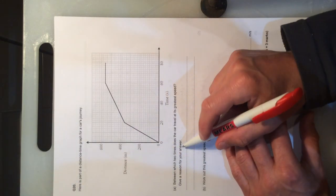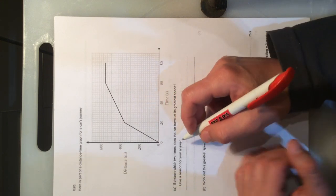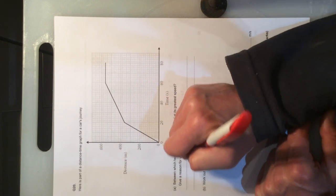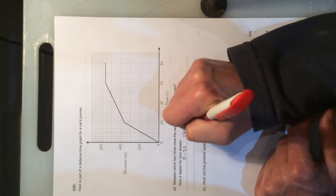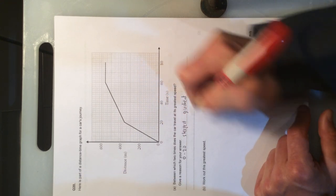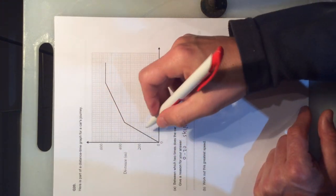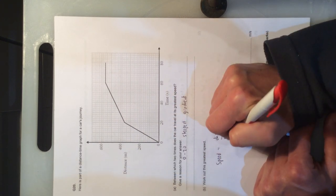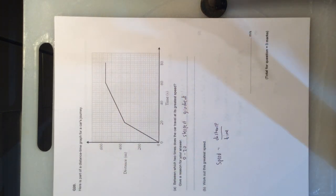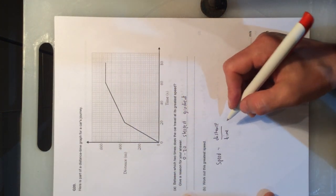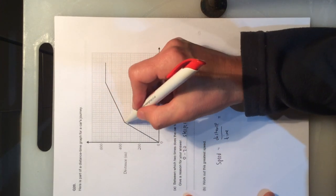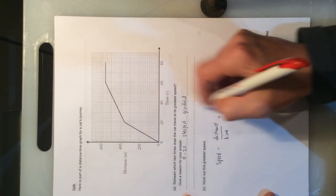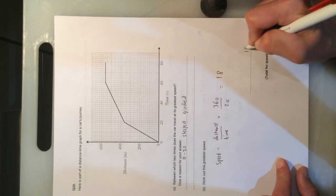Question 20. Between which 2 times does the car travel its greatest speed? Well, it's when the gradient's the steepest. So the gradient's the steepest between 0 and 20. Work out this gradient's speed. We want to do, for the speed, the distance travelled divided by the time. The distance travelled, if we go up, that's 300. So it goes up in 20s, that's the range in 60, divided by the time of 20 seconds, and that gives me 18 metres per second.